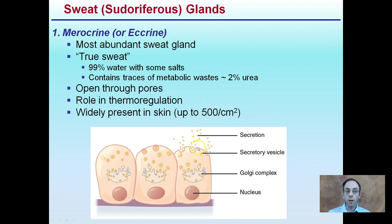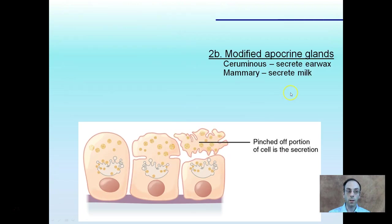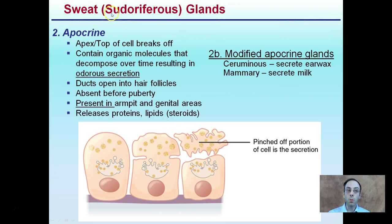You can see an image of that secretion occurring through pores, and you'll notice how it differs from the other types. Merocrine, also called eccrine — these are interchangeable terms — describes how secretion is released. Another type of sweat gland is the apocrine, where the apex or top of the cell breaks off. The term 'AP' can remind you of apex — the top of the cell breaking off — producing an odorous secretion because more than just water is being released.